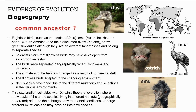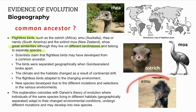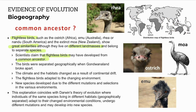Flightless birds show similarities despite living on different land masses and belonging to different species — for example, the ostrich in Africa, the rhea in South America, the emu in Australia, and the kiwis and extinct moa in New Zealand. Scientists claimed these flightless birds developed from one common ancestor, where earlier forms separated when Gondwana land broke apart. The climate and habitats changed due to continental drift, so these flightless birds adapted to the changes, with different mutations and different selections in different environments.